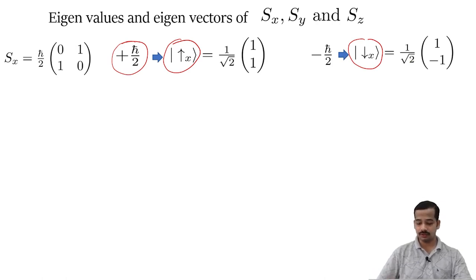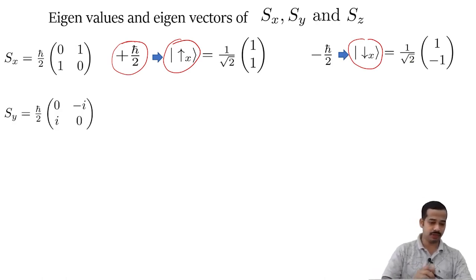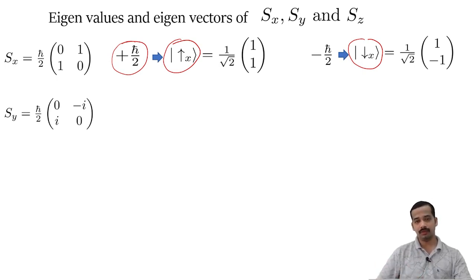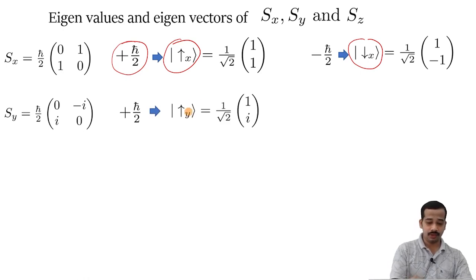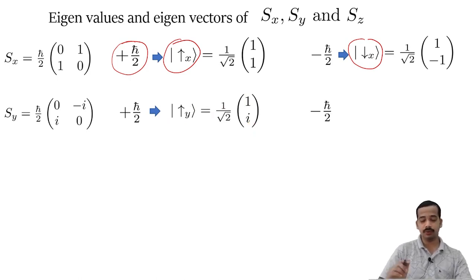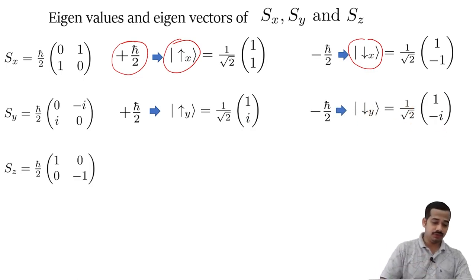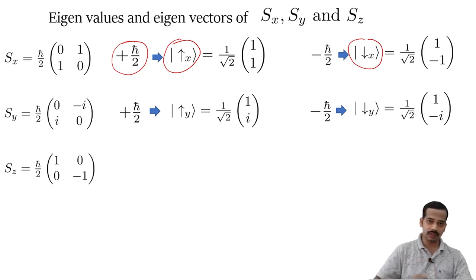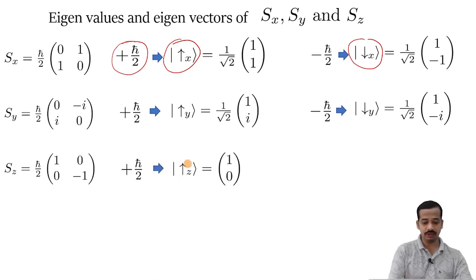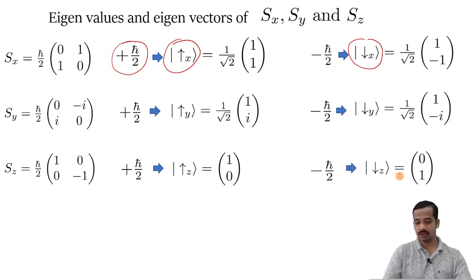Similarly, the S-y matrix equals (h-bar/2) times [0, -i; i, 0]. Its eigenvalues are also plus and minus h-bar over 2. Corresponding to plus h-bar over 2, the eigenstate is spin-up-y, equal to (1/root 2)[1, i]. Corresponding to minus h-bar over 2, the normalized eigenstate is spin-down-y, equal to (1/root 2)[1, -i]. The S-z matrix equals (h-bar/2) times [1, 0; 0, -1], which is diagonal. Its eigenvalues are also plus and minus h-bar over 2. Corresponding to plus h-bar over 2, the eigenvector spin-up-z equals [1, 0]. Corresponding to minus h-bar over 2, spin-down-z equals [0, 1]. You have to remember all of these to solve any problem related to a spin-half system.